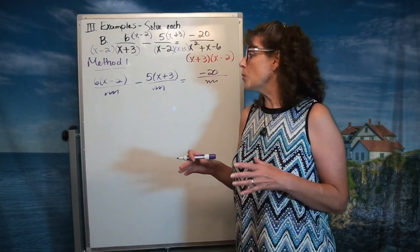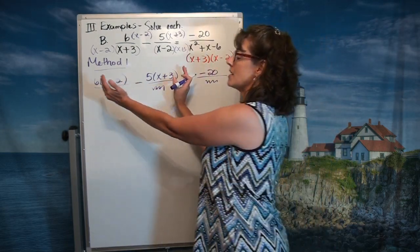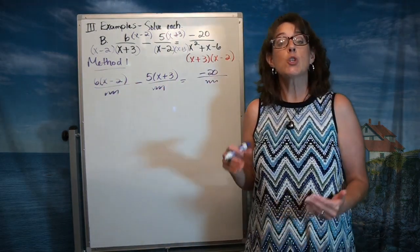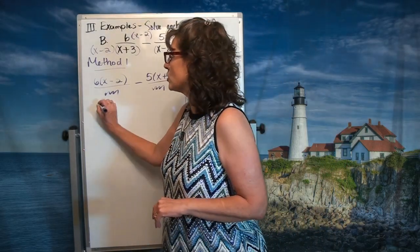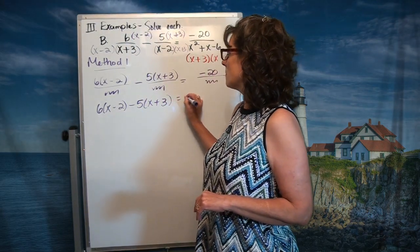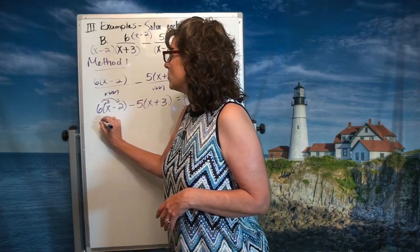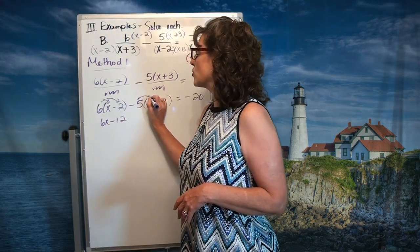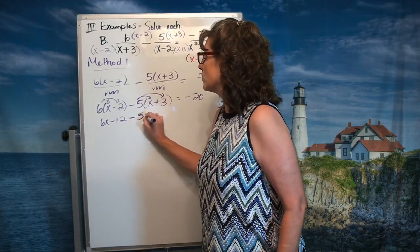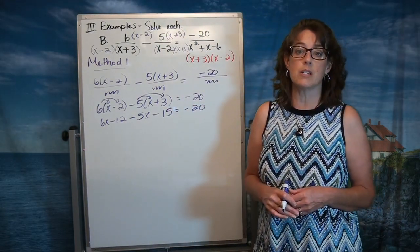We can go ahead and distribute the negative 5 through, or we know that we're going to condense these into one single fraction and drop that denominator, because the denominators will be the same. So at this point we could go ahead and drop that denominator — that sure does make life easier for us, as we noticed in the previous example. Here's the resulting equation that is pretty easy to solve. Let's distribute the 6 through: that gives us 6x minus 12. Be very careful — take the sign with it — we're going to distribute the negative 5 through, giving us negative 5x minus 15.